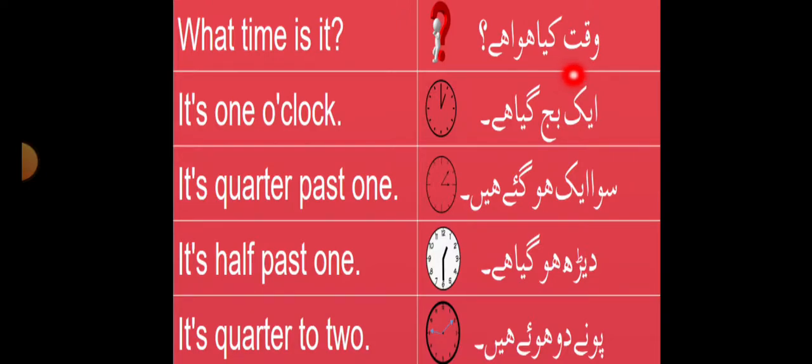For example, if the sentence is given, you will say what time is it. It's one o'clock. It's quarter past one. It's half past one. We will say it's quarter to two. It's very simple.